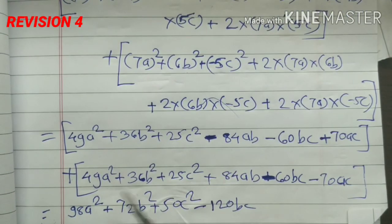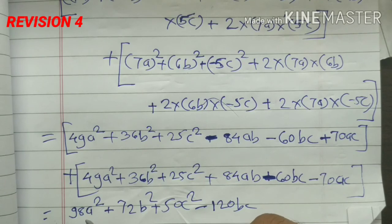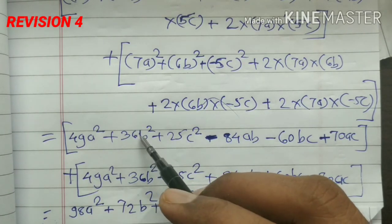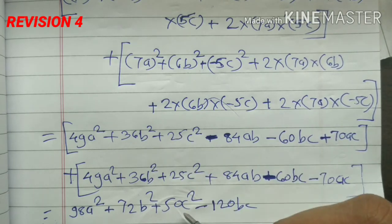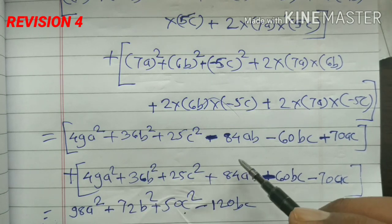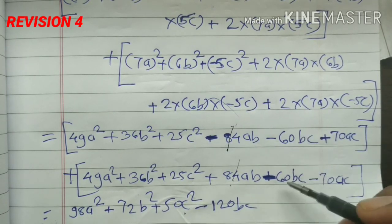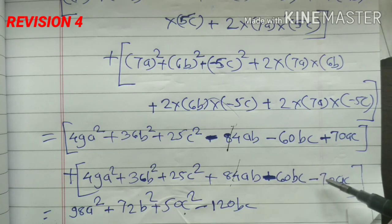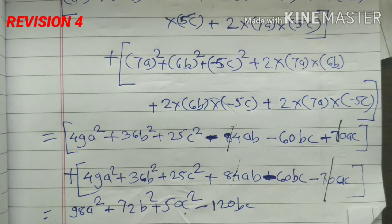By summation we get 98a square plus 72b square plus 50c square. The 84ab terms cancel — one is minus and one is plus, so they cancel. Minus 120bc comes from adding the bc terms. So we get the final answer like this. Practice it according to this revision and write in your notebook, solve the exercise examples. Thank you.